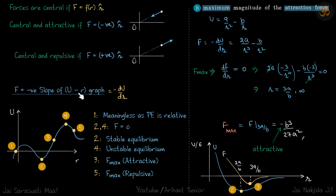In the U-R graph, we know that force is negative of the slope, so it is minus dU by dR. Let's take certain points on a U versus R plot and see what those points represent.